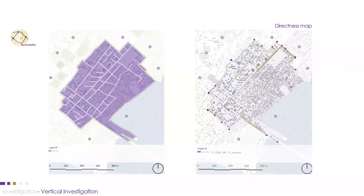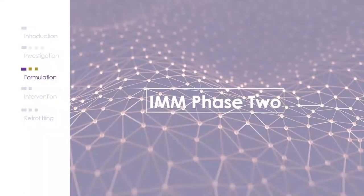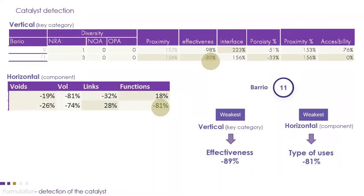We also have the permeability and directness maps. The directness map shows the direct and frequent routes used by people. In the second phase — formulation — we identified the weakest catalysts: one from vertical investigation and one from horizontal investigation. Effectiveness and type-of-uses were the weakest catalysts in barrio 11.